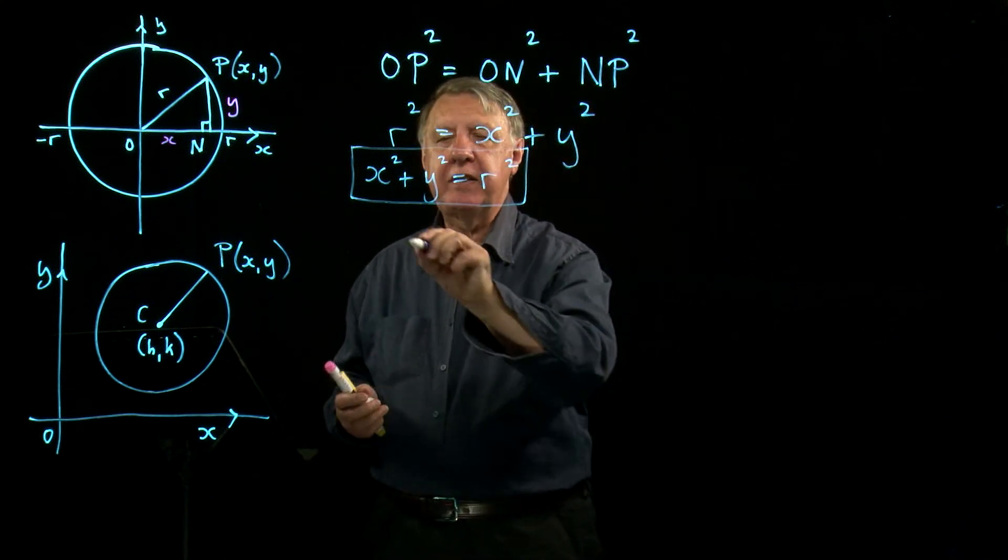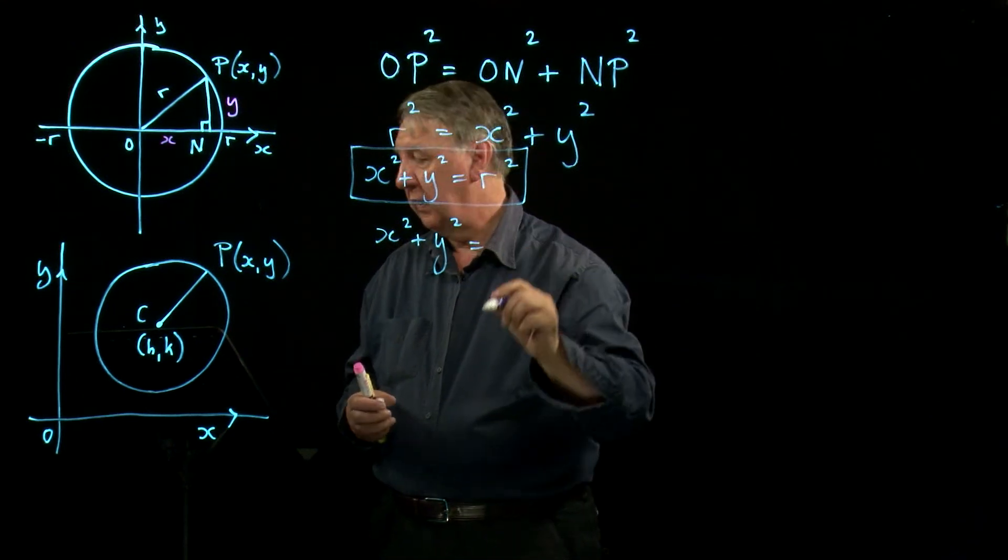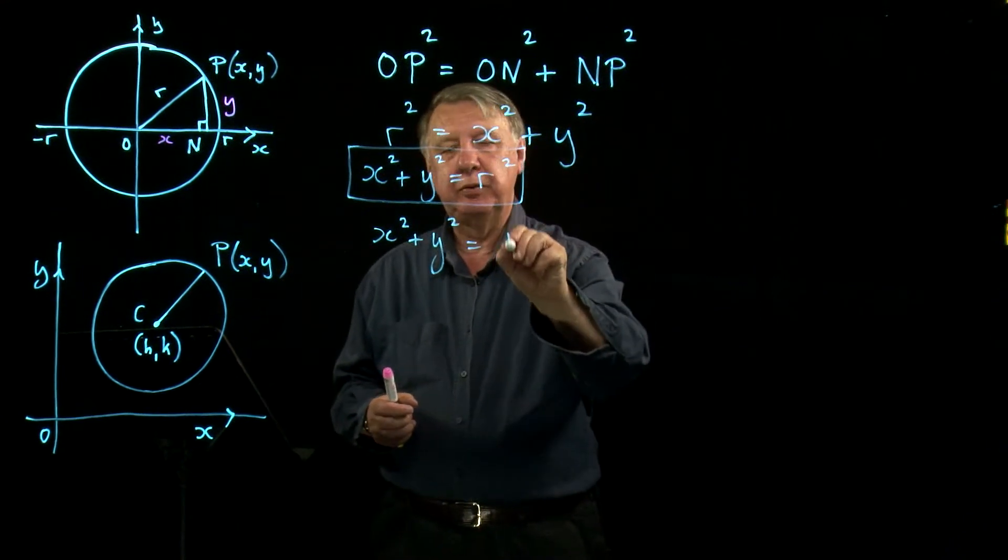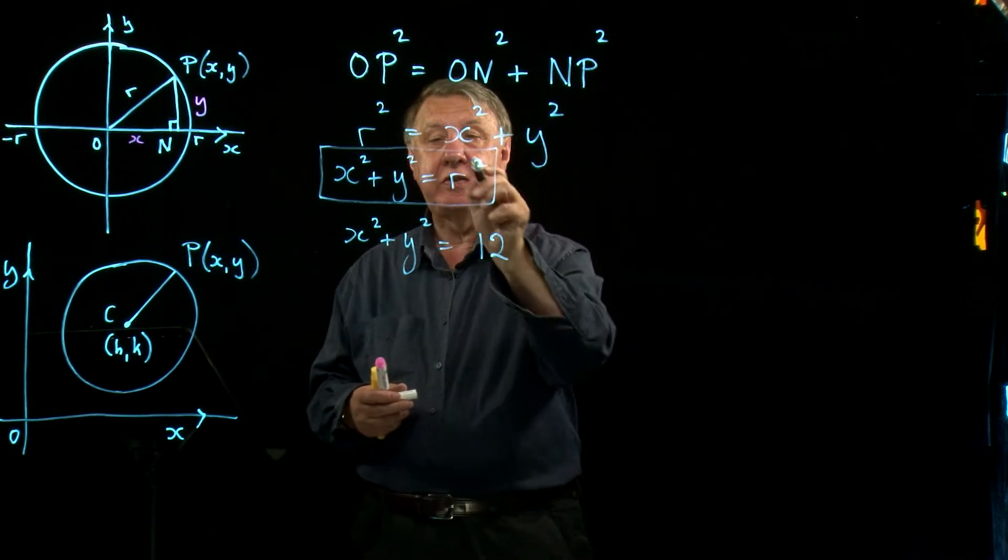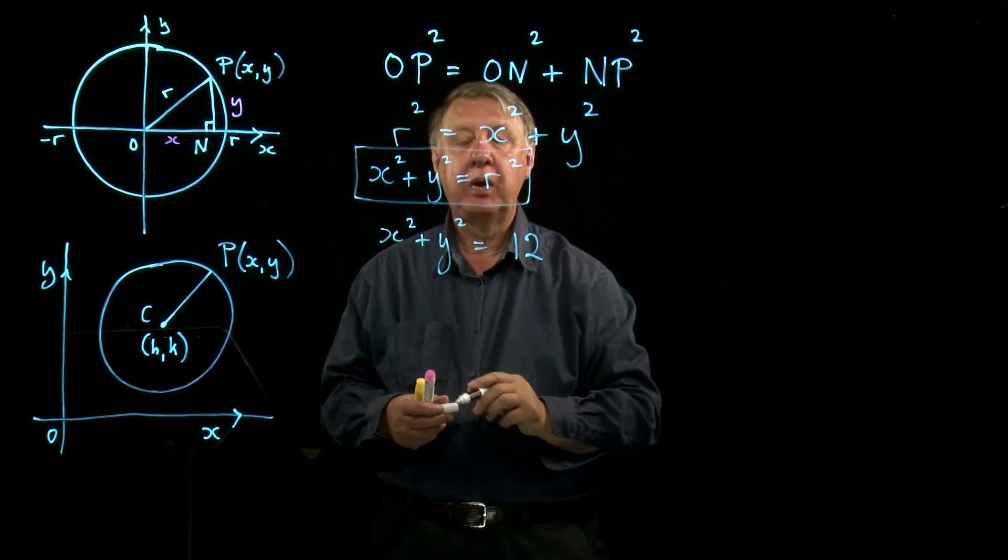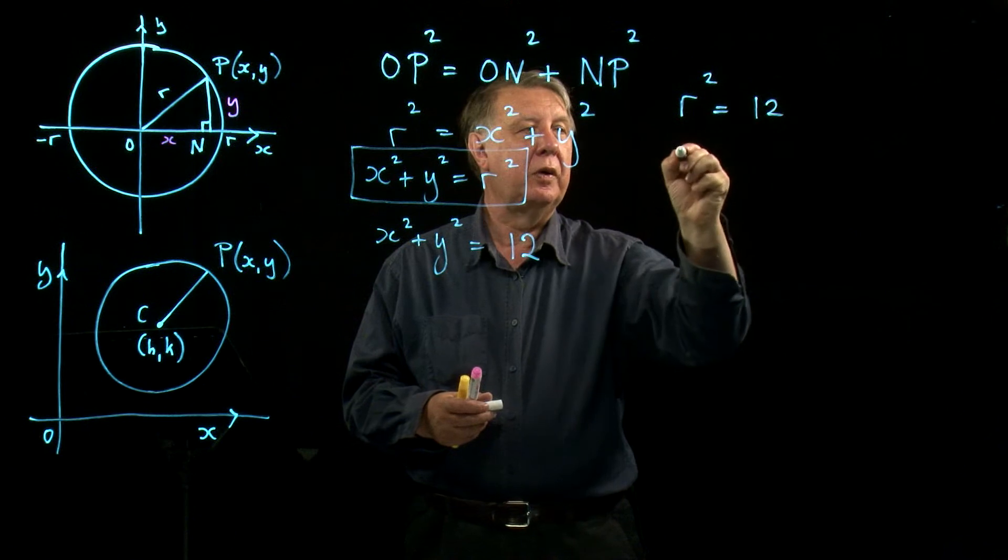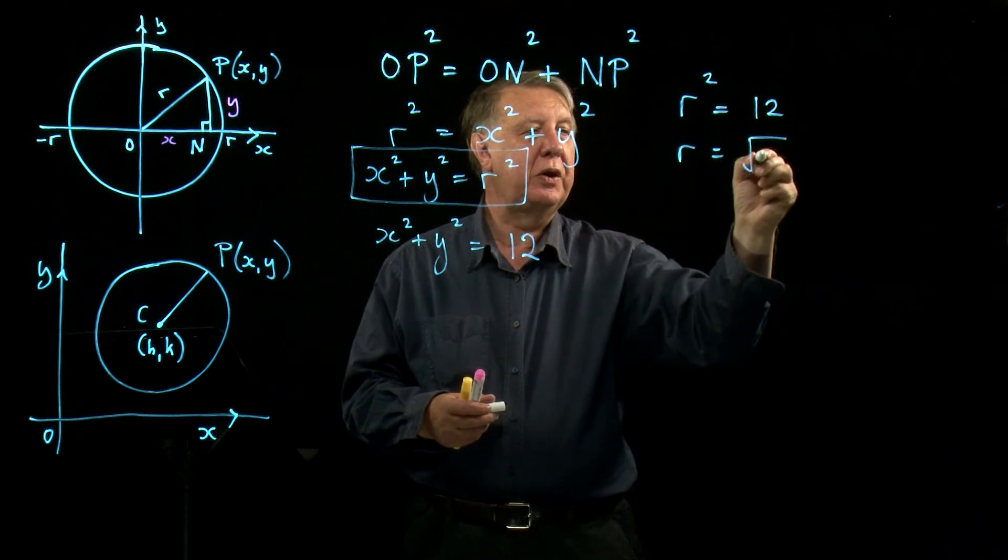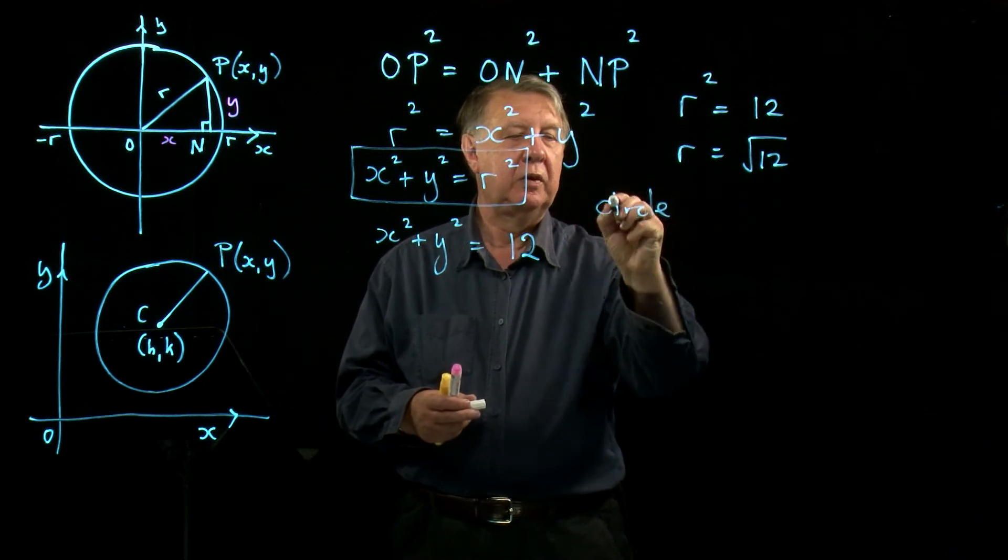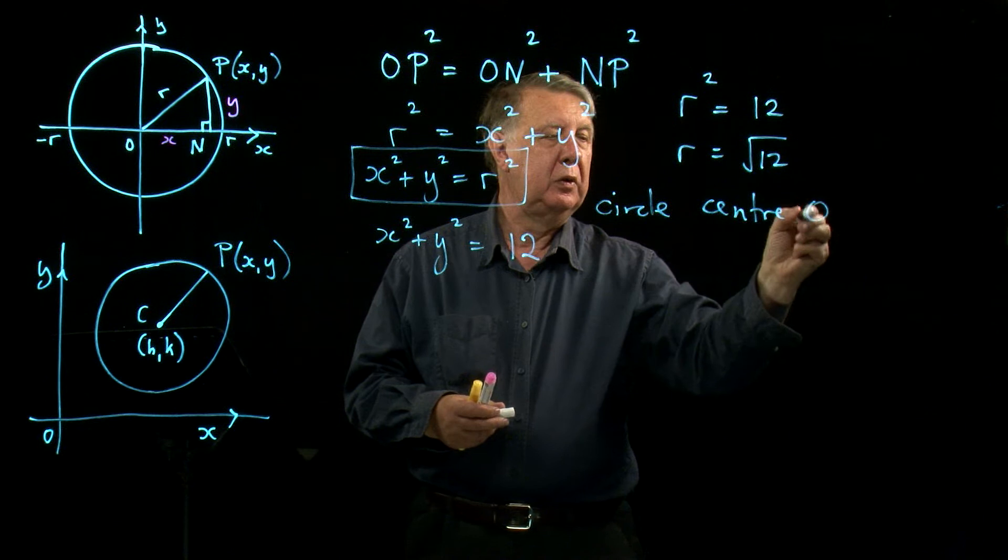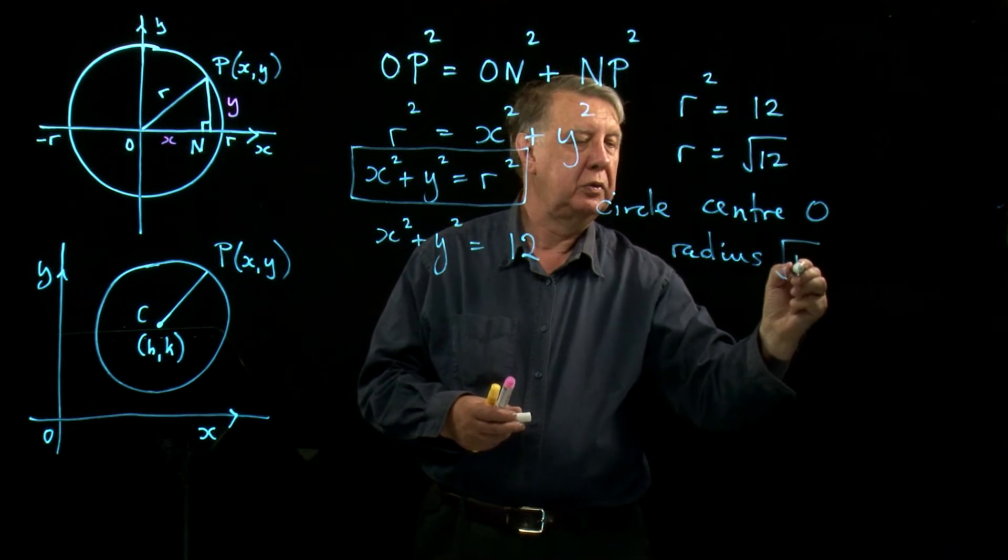So if I write down something like X squared plus Y squared equals, let's go for 12. What am I saying that that actually represents? Well, it's in the right form. R squared is equal to 12, so R is the square root of 12. So this represents a circle, the circle center O, radius the square root of 12.